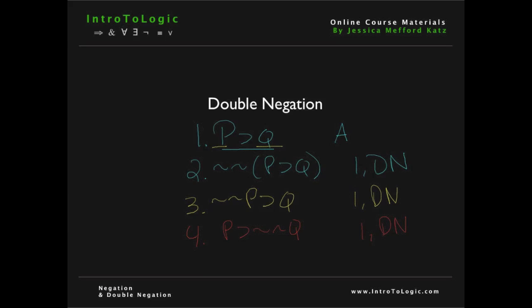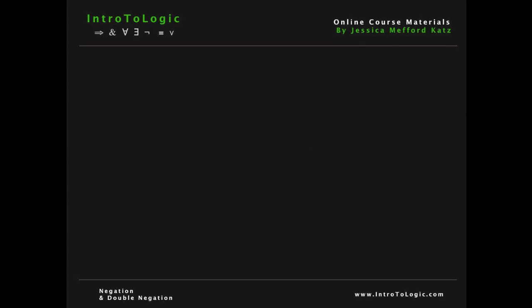Just keep in mind that double negation allows us to take any P and derive NOT NOT P and vice versa, and that includes a whole sentence or a whole conditional or the components of that sentence. Now that we've learned several rules of inference, let's try using them in a practice problem.